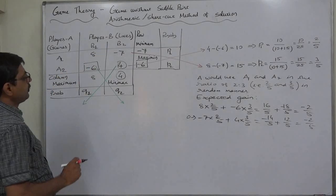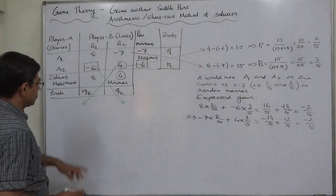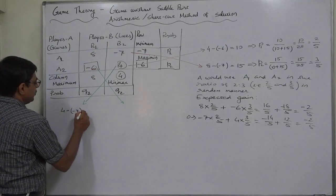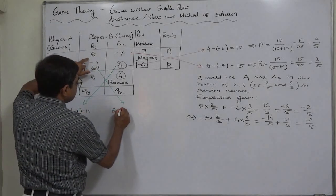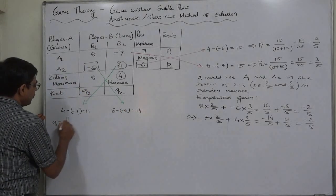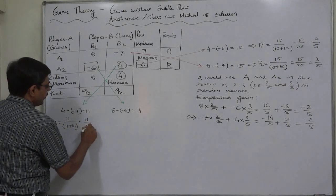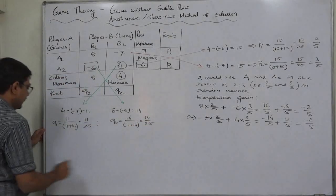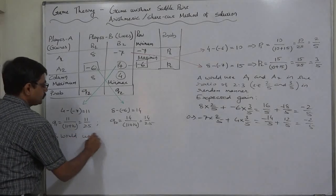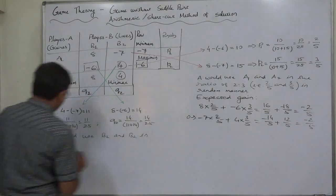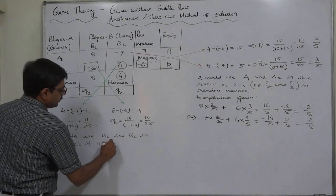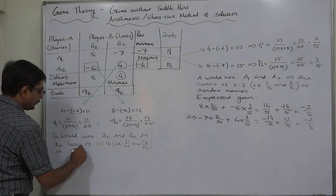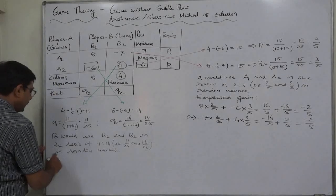Now for player B — the probability that B uses strategy B1 is Q1 and for B2 is Q2. To calculate Q1, we consider the payoffs of strategy B2: 4 minus minus 7, that is 11. And for B1 it is 8 minus minus 6, which is 14. So Q1 will be 11 upon 11 plus 14, that is 11 by 25, and Q2 will be 14 upon 11 plus 14, that is 14 by 25. That means B would use strategies B1 and B2 respectively in the ratio of 11 is to 14, in a random manner in the long run.